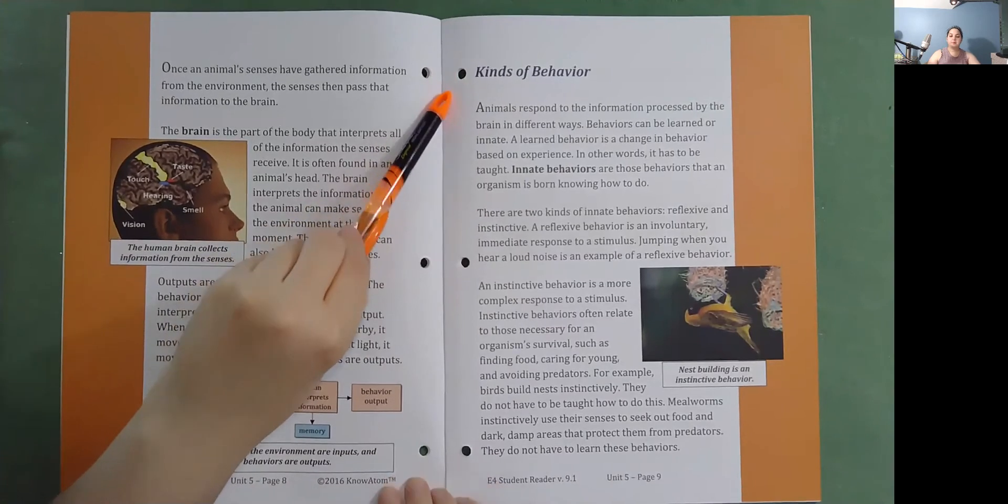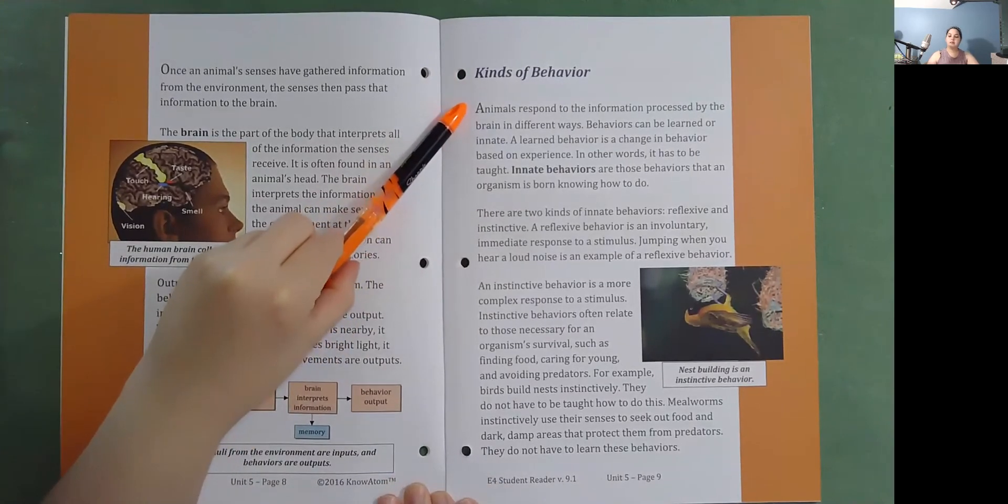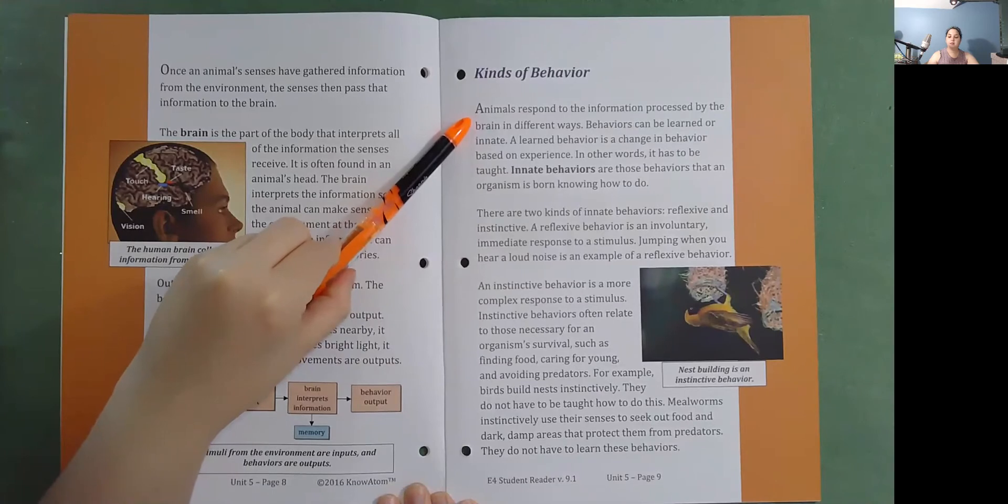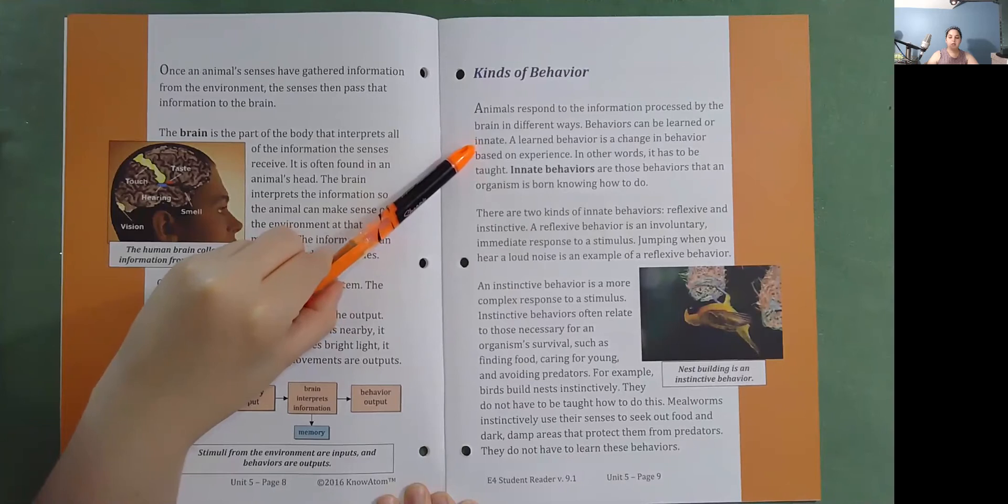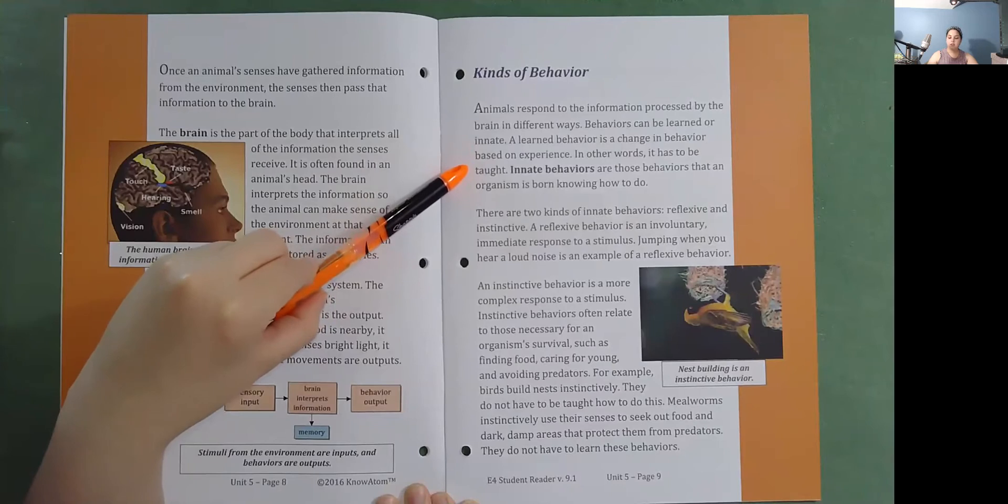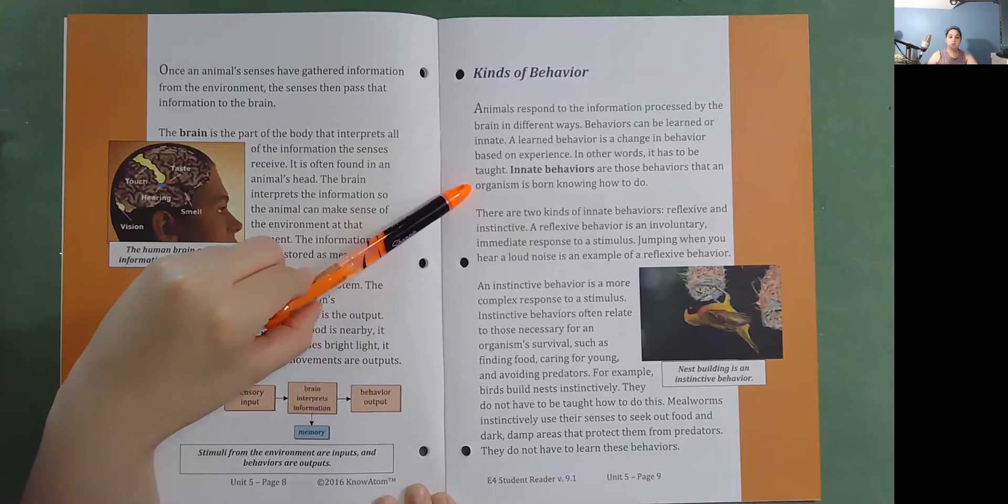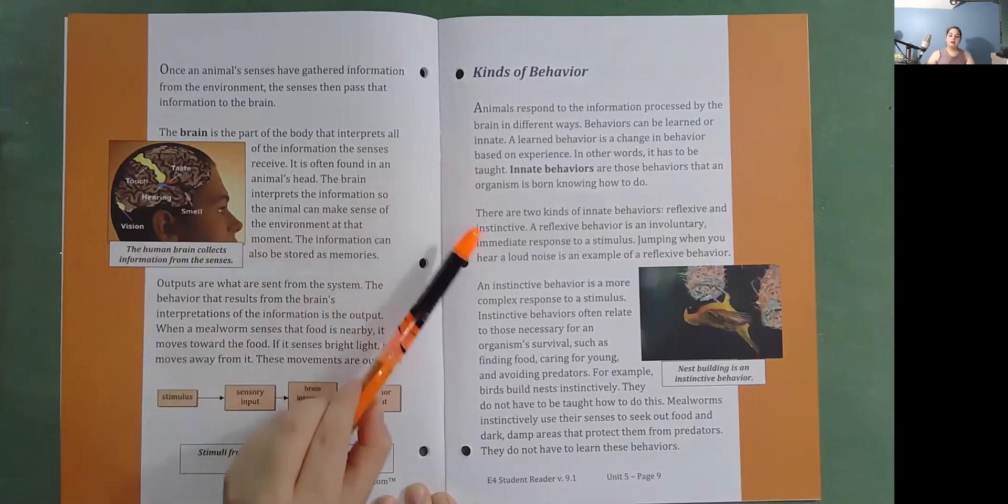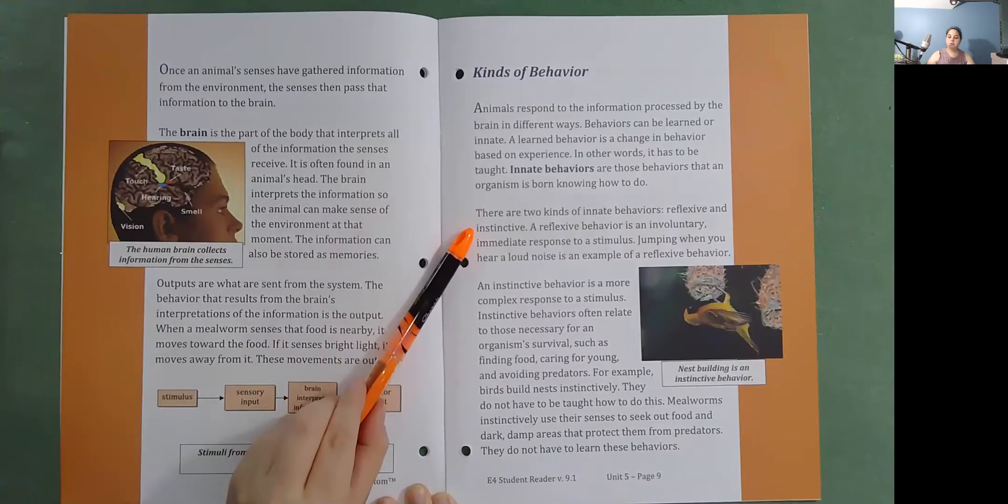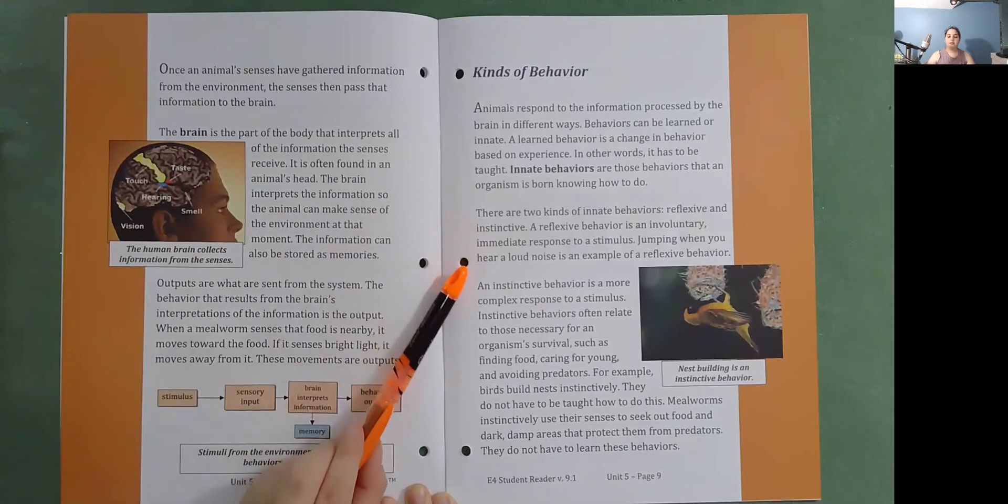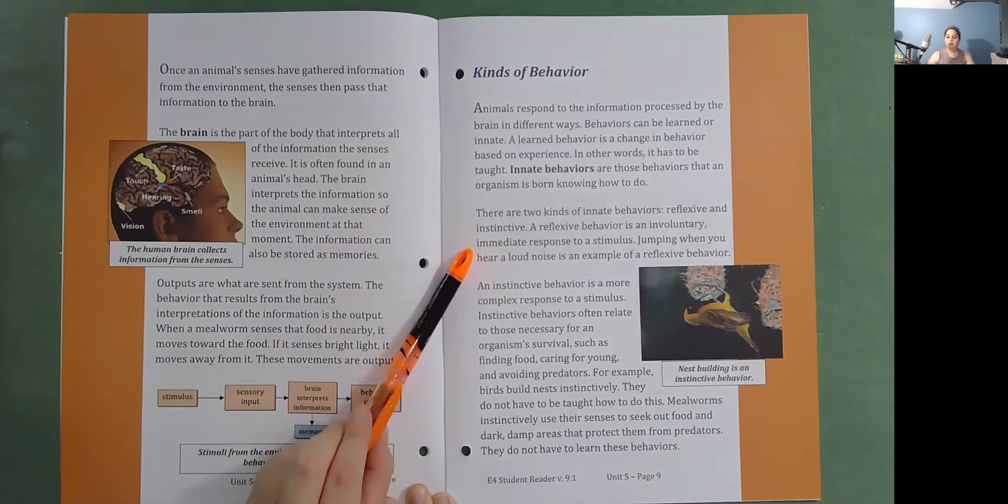Kinds of behavior. Animals respond to the information processed by the brain in different ways. Behaviors can be learned or innate. A learned behavior is a change in behavior based on experience. In other words, it has to be taught. Innate behaviors are those behaviors that an organism is born knowing how to do. There are two kinds of innate behaviors: reflexive and instinctive. A reflexive behavior is an involuntary, immediate response to a stimulus.